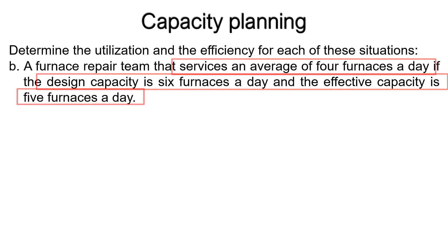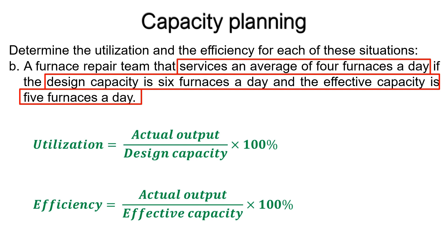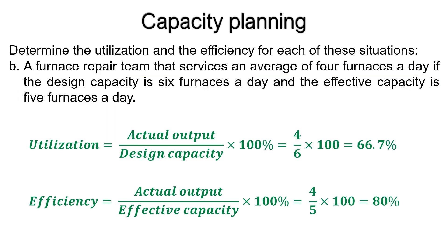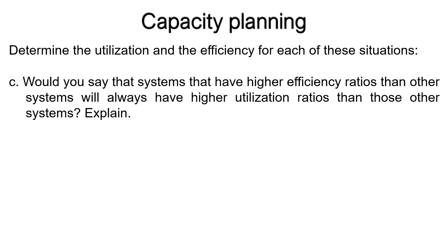In the second situation, the actual output is 4 furnaces per day, the design capacity is 6 furnaces per day, and the effective capacity is 5 furnaces per day. Substituting these values: utilization equals 4 divided by 6, multiplied by 100, equals 66.7%; and efficiency equals 4 divided by 5, multiplied by 100, equals 80%.